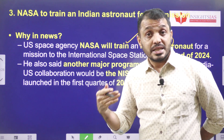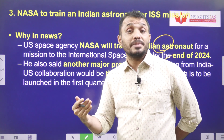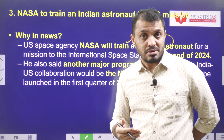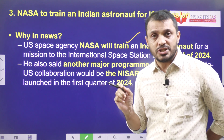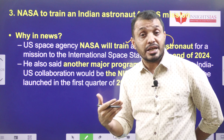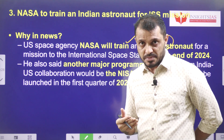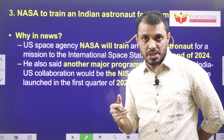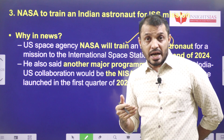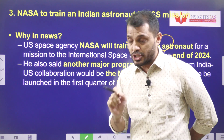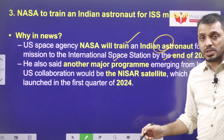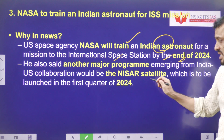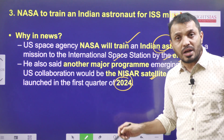The International Space Station is reaching its expiry date and will be taken out of service, to be brought down into the ocean very soon. Russia also announced they are exiting from the ISS, as they would like to build their own space station. China is already building their own space station. India has set a target of 2035 to have its own space station, and ISRO announced the NISAR satellite, a collaboration between NASA and ISRO, will be launched in the first quarter of 2024.